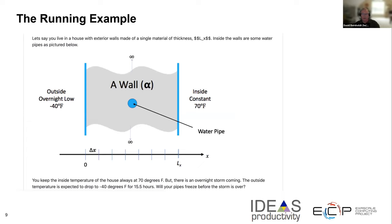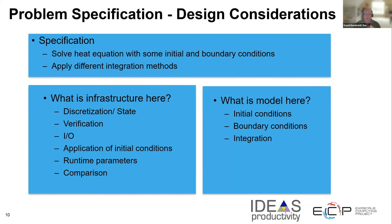Let's think about this in terms of a simple example: the heat equation. The physical problem is a pipe in a wall — it's cold outside, warm inside — and we want to know when to worry about the water pipe freezing. From a design perspective, the specifications include the heat equation, initial conditions, and boundary conditions. And because we want to experiment with the numerics, we want to easily apply different integration methods to this problem.